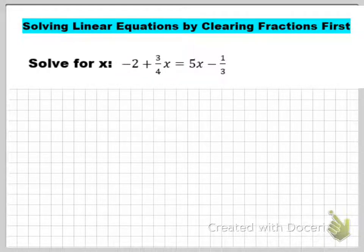In this example, we are going to look at how to solve a linear equation, but this time we see there are fractions in our equation. We have 3/4, that's the coefficient on the x term on the left side of the equal sign, and then we also have a negative 1/3 as a constant on the right side of the equal sign.